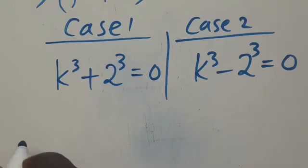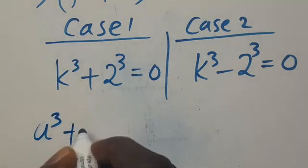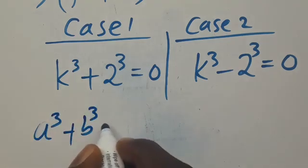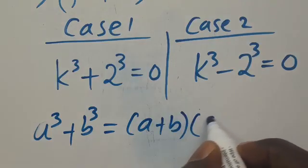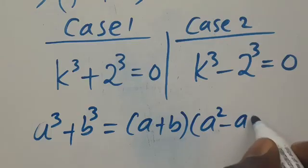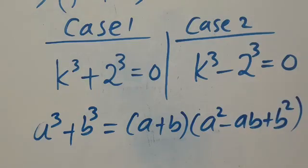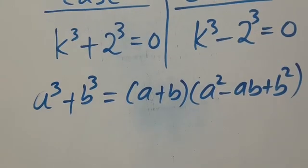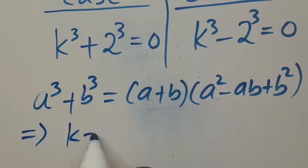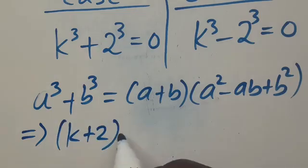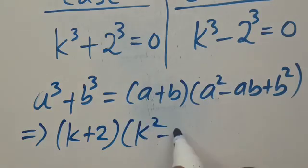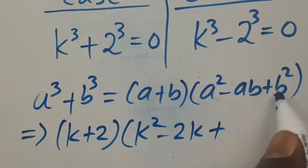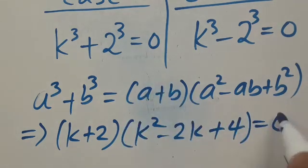Remember that when you have a to the power of 3 plus b to the power of 3, this always equals a plus b, all in brackets, multiplied by a squared minus ab plus b squared. So where we have our a to be k and our b to be 2, this implies we have k plus 2, all in brackets, then a squared will be k squared, minus ab will be 2k, plus b squared will be 2 squared which is 4. Then we set everything equal to 0.